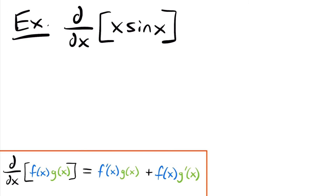Let's look at another example. Here we want to find the derivative of x times sin x. In this derivative we have two functions: the function x and the function sin x. Those are our two functions being multiplied together, which is why we need to use the product rule. This is going to be equal to the derivative of the first function x, which is just 1, multiplied by the original second function, sin of x. We took the derivative of the first function and multiplied it by the second function.